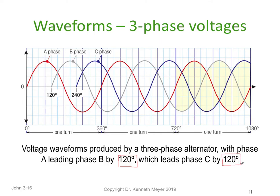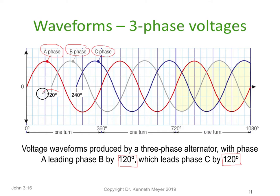Once we start to add capacitances, reactances, and inductors to the situation, we're going to be able to shift some of these relationships. But if we had a fully resistive load, currents and voltage will all stay in phase. In a three-phase generator, the voltages themselves — A phase, B phase, and C phase — are always at 120 degrees separation. That's a physical result of the way the machine is wound. The current may shift in relation to them, but the voltages themselves will always be at 120 degrees from each other.